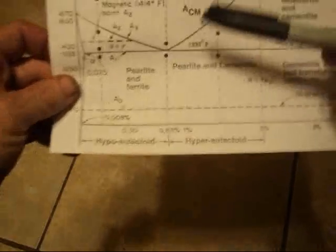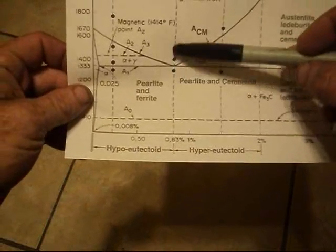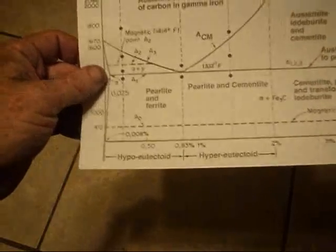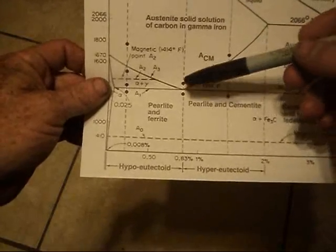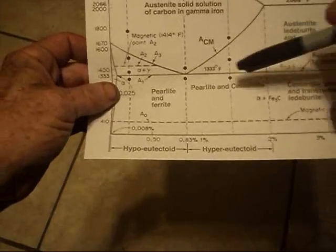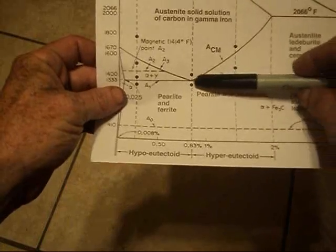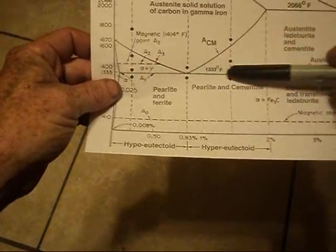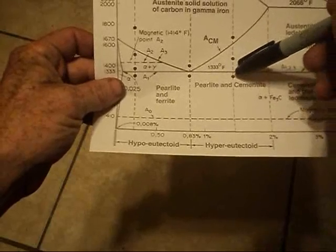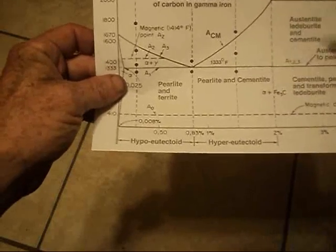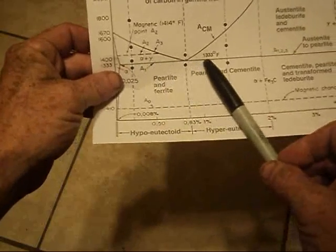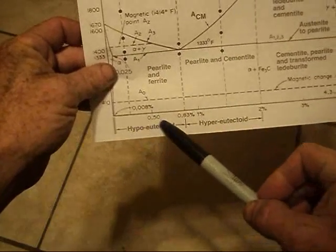you have the eutectoid line, which is point eight three to eight four percent carbon. 1084 is eutectic steel, which means that this line is the temperature—the lower transformation temperature. This is where your steel is going to lose its magnetism. And you'll notice that this line does not change at all for the amount of carbon in the steel.